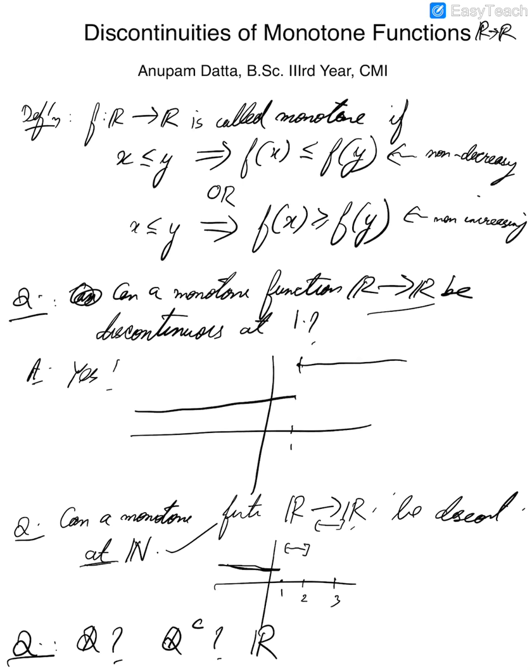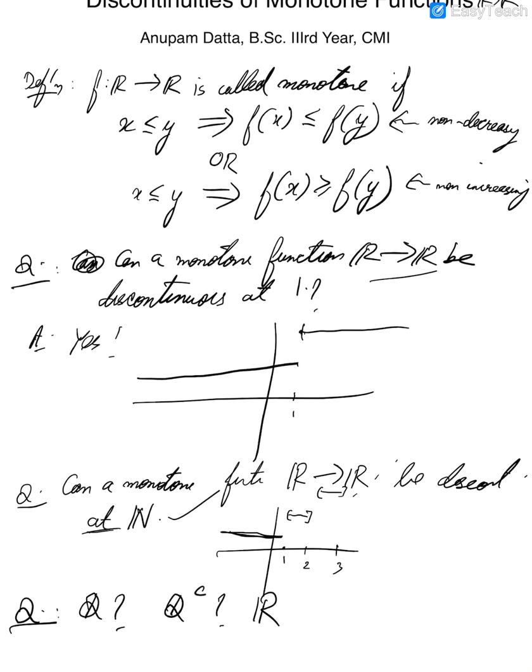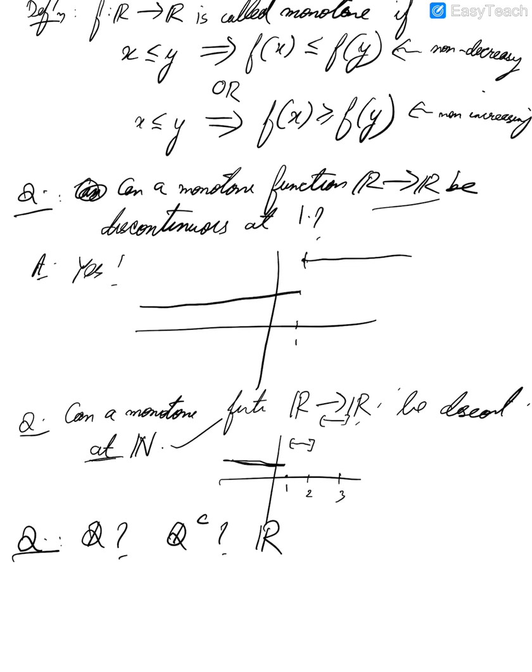Before going into the main result, I will briefly say what happens for Q if we drop the restriction monotone. You must have seen this function: f(x) is 0 if x is in Q and 1 if x is irrational. This function is well known to be discontinuous everywhere. But notice that this is not a monotone function. So this function doesn't serve as an example for the real case.